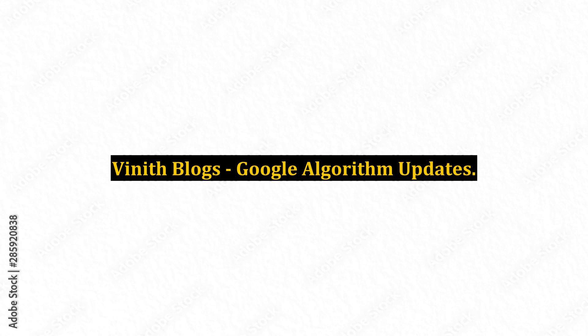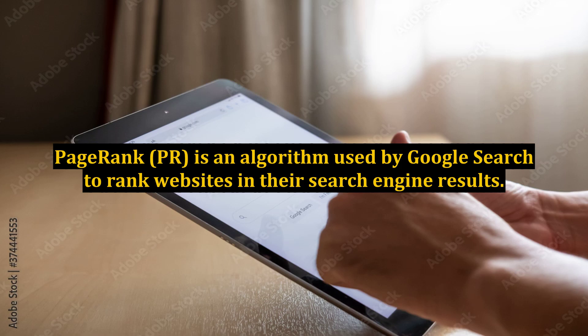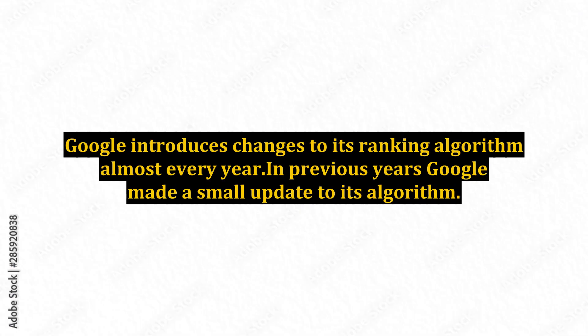Beneath Blogs — Google Algorithm Updates. What is the Google Algorithm? PageRank (PR) is an algorithm used by Google Search to rank websites in their search engine results. Google introduces changes to its ranking algorithm almost every year.